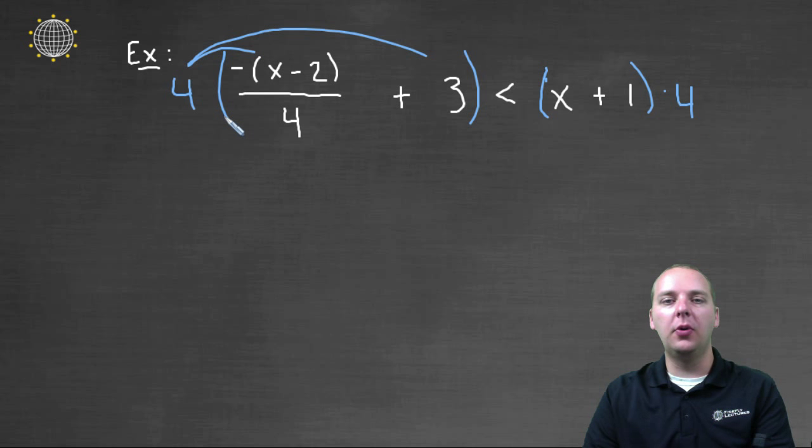So let's distribute four on the left hand side, and on the right hand side. So if we multiply four on the left hand side, these fours will cancel, and you would get negative parentheses x minus two. And then distribute the four also to the three,